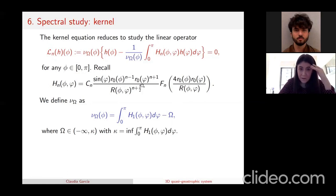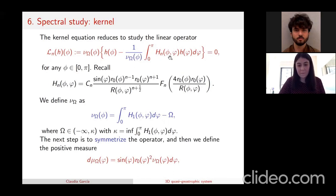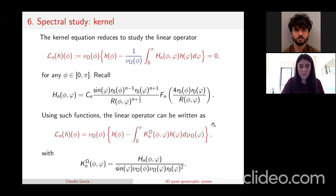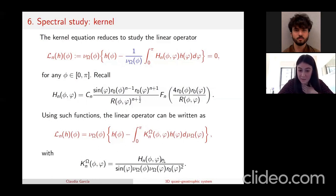Defining a new measure that is sine(bar-phi) times r₀(phi) squared times nu(omega), we put this into the kernel. Now the non-local operator can be written with this new measure and a new kernel that is symmetric in phi and bar-phi (the operator is self-adjoint). So we define the operator from L² (with this measure) to L² — this is a Hilbert-Schmidt integral operator and is self-adjoint.